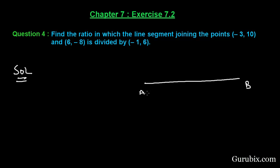Draw a line segment AB. Coordinates of A are (-3, 10) and coordinates of B are (6, -8). This line segment is divided by another point C whose coordinates are (-1, 6). We have to calculate the ratio in which the point C divides the segment.